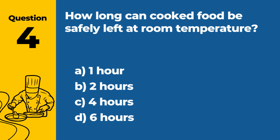Question 4. How long can cooked food be safely left at room temperature? a. One hour. b. Two hours. c. Four hours. d. Six hours. Answer b. Two hours. Cooked food should not be left at room temperature for more than two hours to prevent bacterial growth.